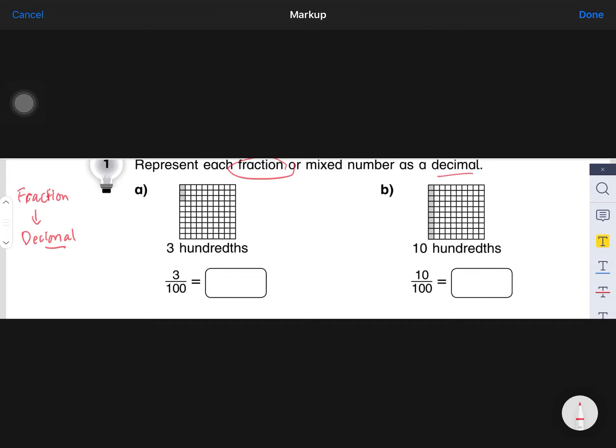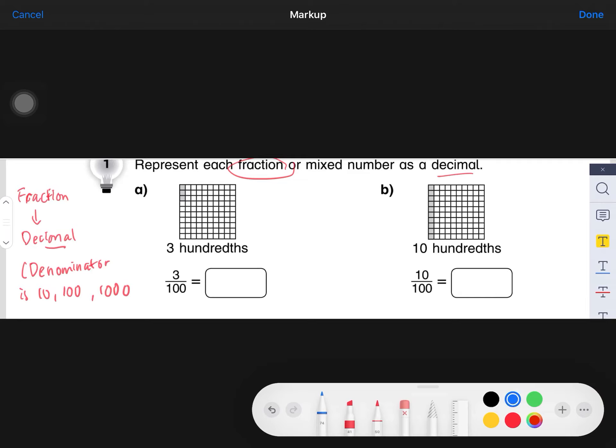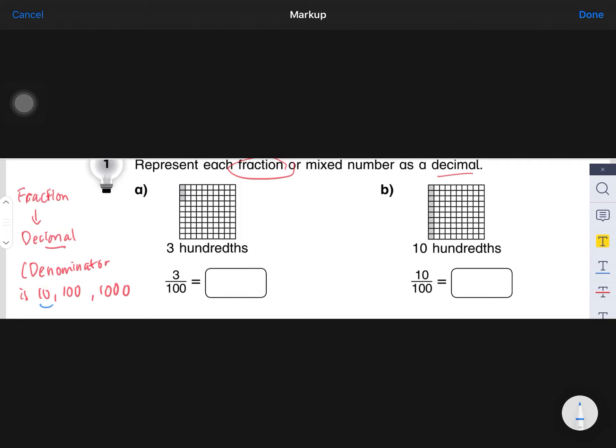This is what we are going to learn today. You need to know that we can only do this when the denominator is 10, 100, or 1000. Last week you already learned how to convert with the denominator 10. Today we are going to learn about how to convert fractions with the denominator 100 to a decimal.